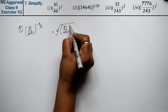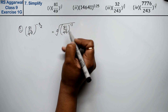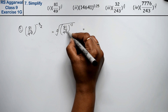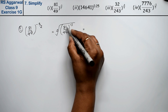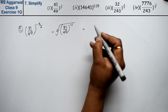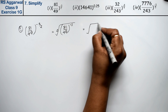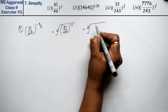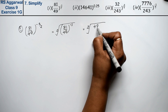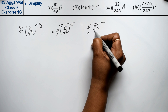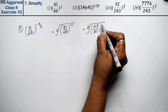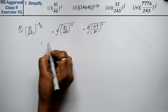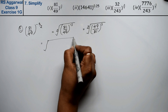Since the power is minus 3, it is negative, so the reciprocal will happen — meaning the bottom comes to top and top goes to bottom. So we get 49 upon 81 to the power 3. Now the power is 3, so how can we write this?